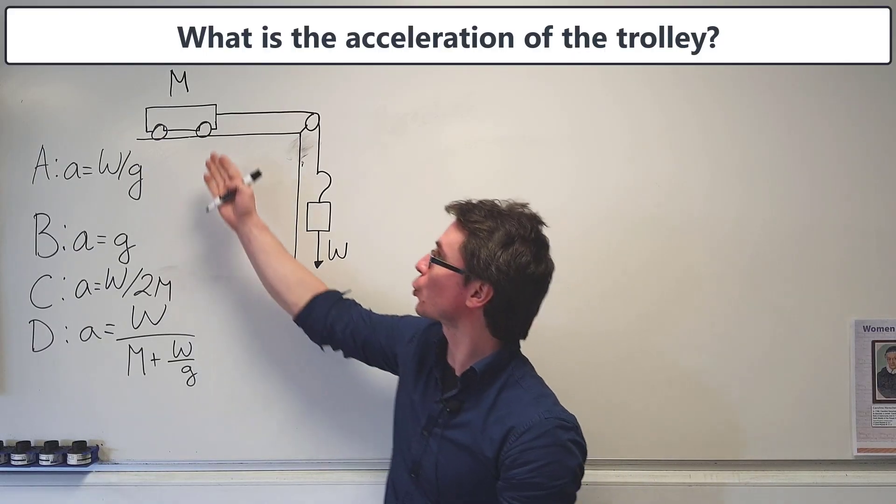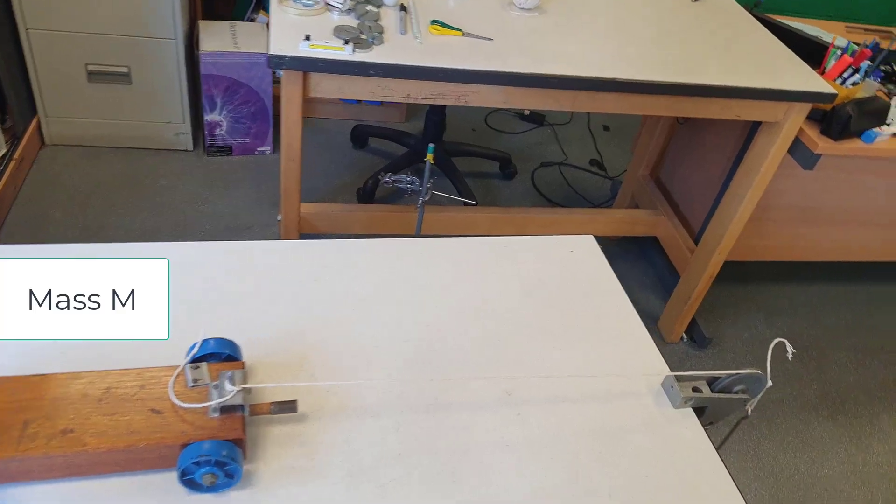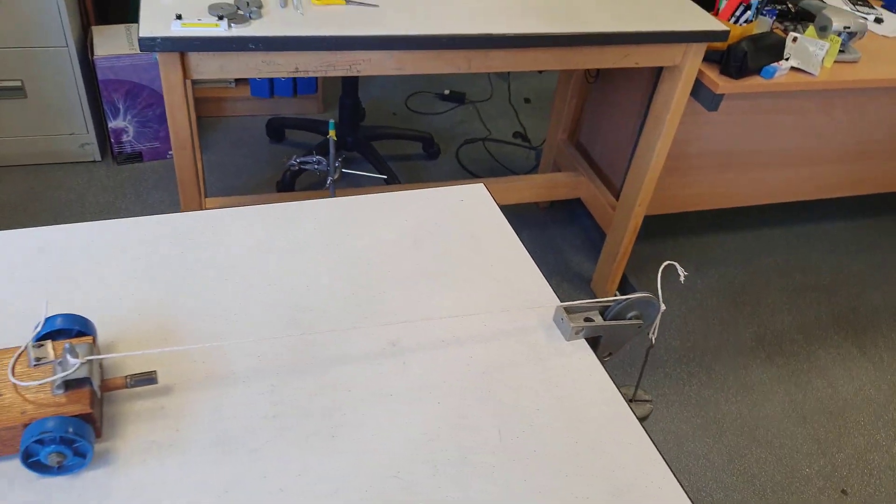What's the acceleration of this trolley? We have a trolley of mass m that is connected to a pulley and a weight w pulling it downwards.